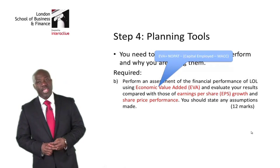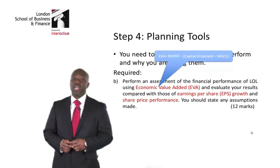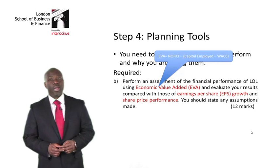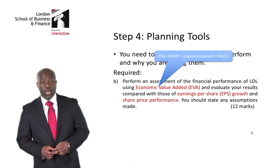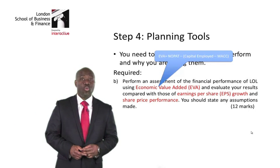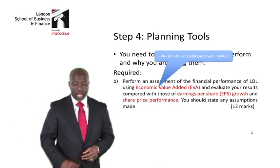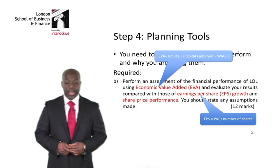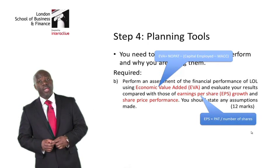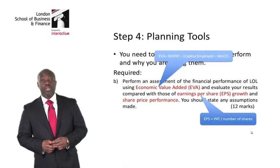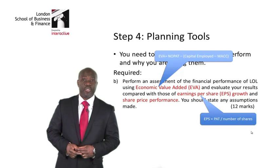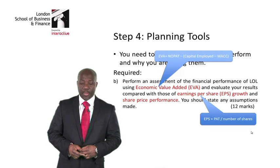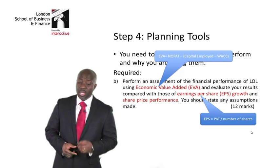EVA is calculated as NOPAT minus (Economic Capital Employed × WACC). I also know that I need to calculate EPS. For EPS, I need my PAT — profit after tax — and I also need to find the number of shares.